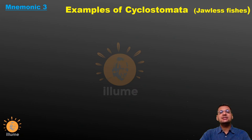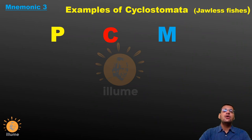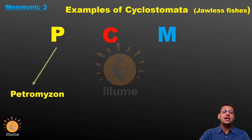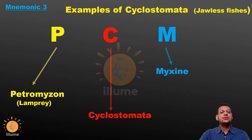The next mnemonic is for the examples of Cyclostomata. Cyclostomata are fishes without jaws. To remember their examples, just remember the three subjects needed for IIT-JEE or NEET preparation: Physics, Chemistry, and Maths — PCM. P stands for Petromyzon, also called Lamprey. C stands for Cyclostomata, the name of the group. M stands for Myxine. So Myxine and Petromyzon are examples of Cyclostomata. Remember PCM, and it will help you recall Petromyzon and Myxine as Cyclostomata. Myxine is also called Hagfish.